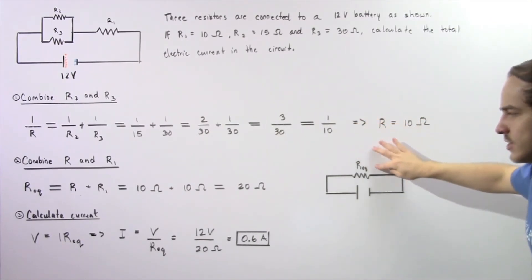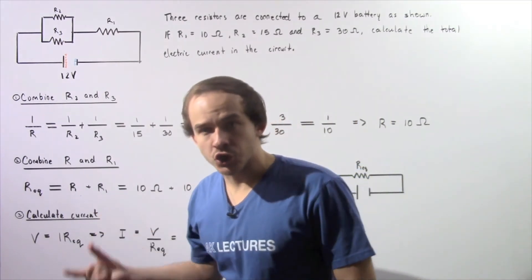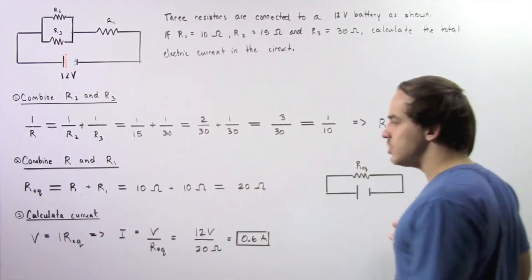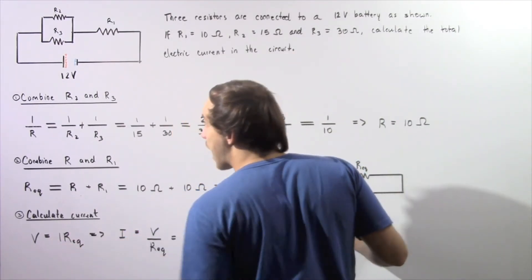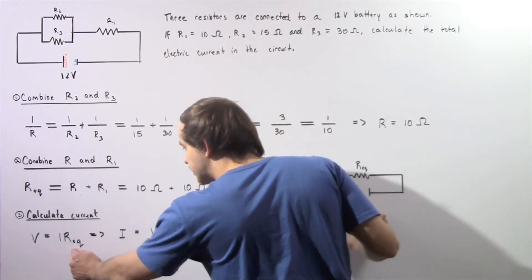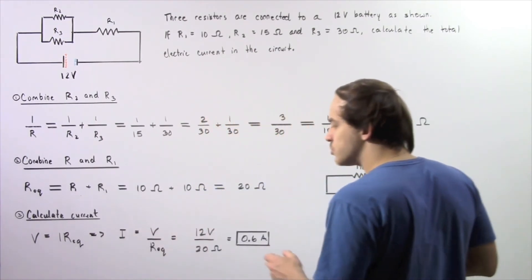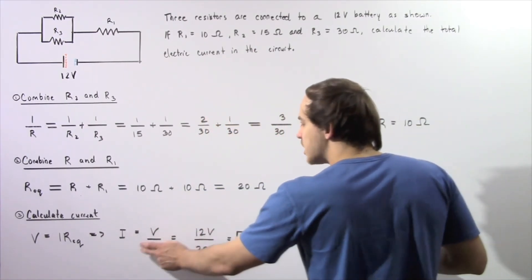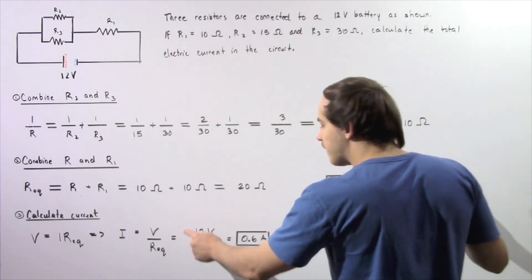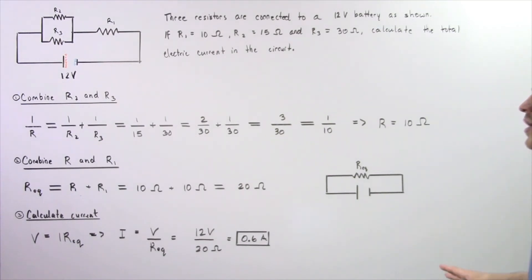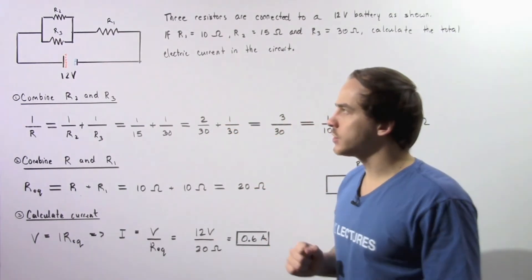So now, in the last step, to calculate the total electric current found inside our circuit, we use Ohm's law. So voltage is equal to the product of our current and our equivalent resistance. So we rearrange, solve for I. I is equal to the voltage, 12 volts, divided by the resistance given by 20 ohms. So 12 divided by 20 gives us 0.6 amps as our electric current found in our electric circuit.